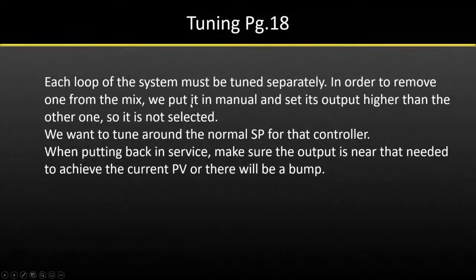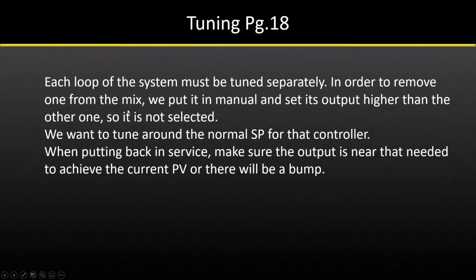Tuning: each loop of the system must be tuned separately since they don't operate together. To remove one from the mix, put it in manual and set its output higher than the other one so it doesn't get selected inadvertently. Tune around the normal set point for that controller. When putting it back in service, make sure the output is near that needed to achieve the current PV, or there will be a bump.